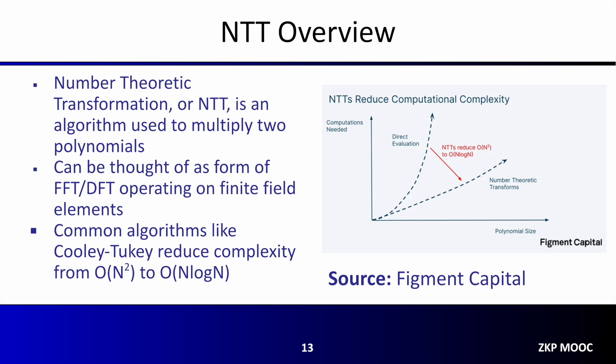The next computationally expensive primitive found in SNARKs and STARKs is number theoretic transformation, also referred to as NTT. NTT is an algorithm used to multiply two polynomials. It is similar to other algorithms such as FFT or DFT, but unique in that it operates over finite field elements. One of the common algorithms used to implement NTT is the Cooley-Tukey algorithm, which reduces the complexity of polynomial multiplication from O(n²) to O(n log n).